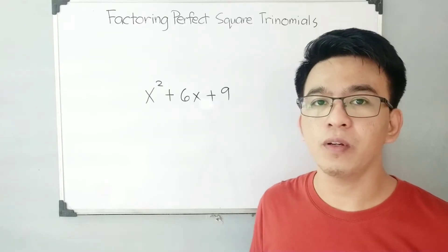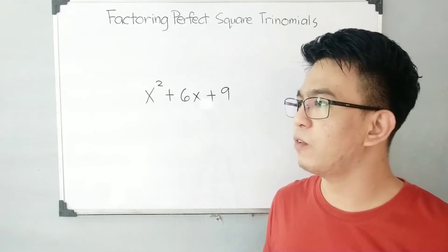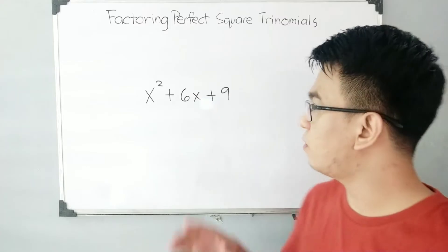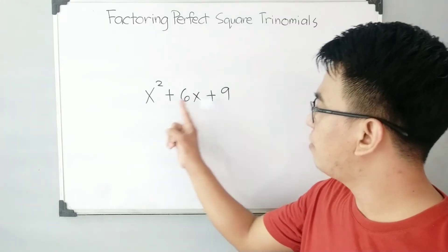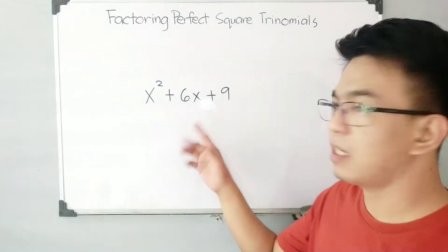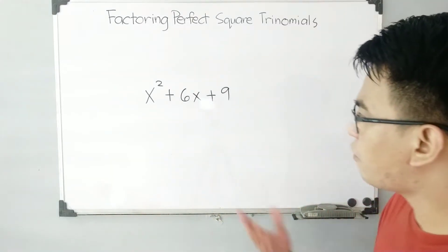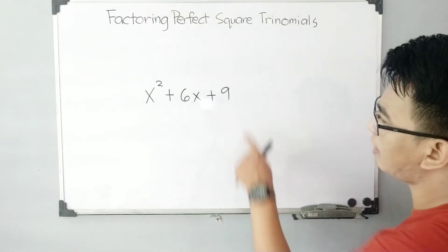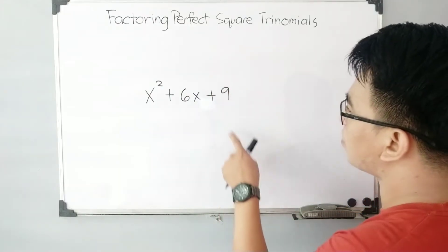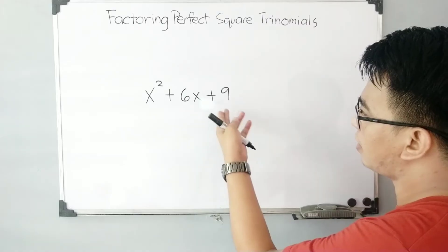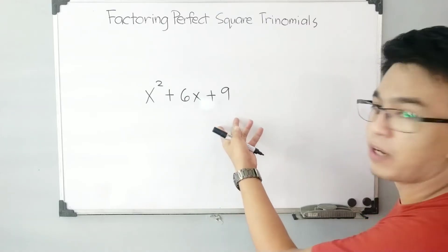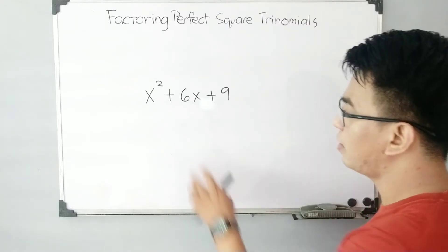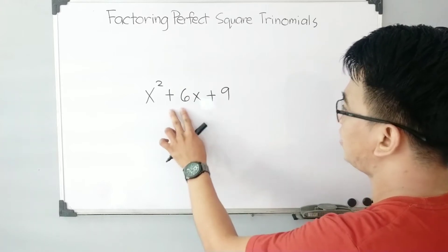From our previous video, we tried to factor out binomials. So, we have here x squared plus 6x plus 9. To factor this one, I would think of two numbers to multiply whose product is 9, and when we add them, the answer is equal to 6.